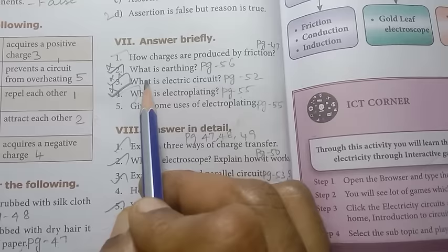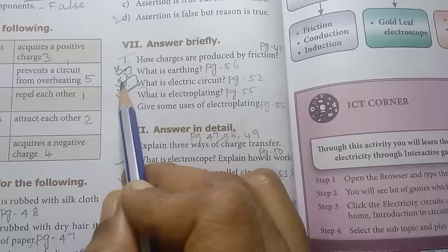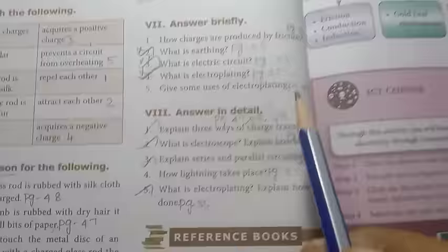Roman number 7, answer briefly. First one: How are charges produced by friction? This is important. What is earthing? What is electric circuit? What is electroplating? These 3 questions are repeated. So in this lesson, let's try to answer briefly four questions.